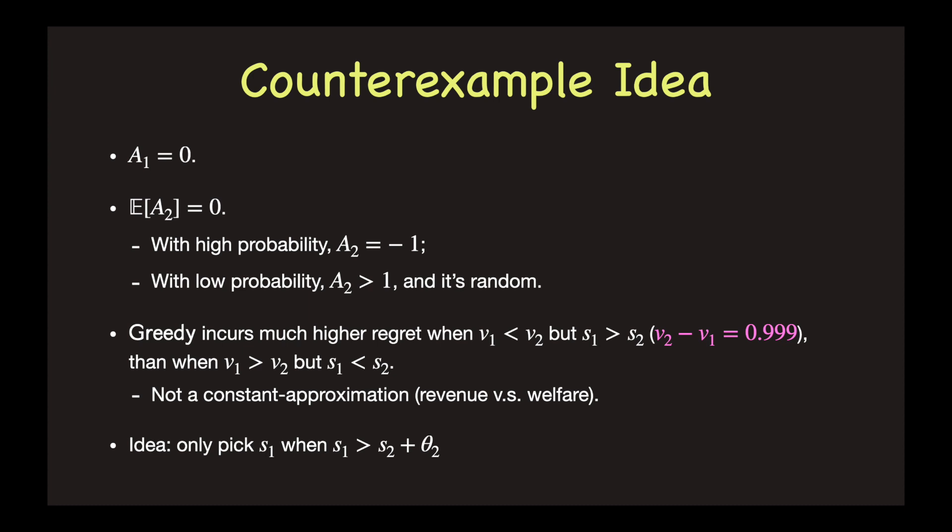Here is the idea for a counterexample. The first observation has no noise. The second observation either has a noise of minus 1 or a positive noise larger than 1. Greedy makes the wrong choice when the higher value has a lower observation. This can be either v1 is less than v2 but s1 is higher than s2, or v1 is higher than v2 but s1 is less than s2.